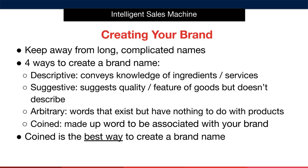There are four ways to create a brand name. The first way is to use what's called a descriptive mark. This conveys knowledge of ingredients or services. Some examples of this are Best Buy, Auction Web, or First Bank — the brand name basically describes what the business does in some way.